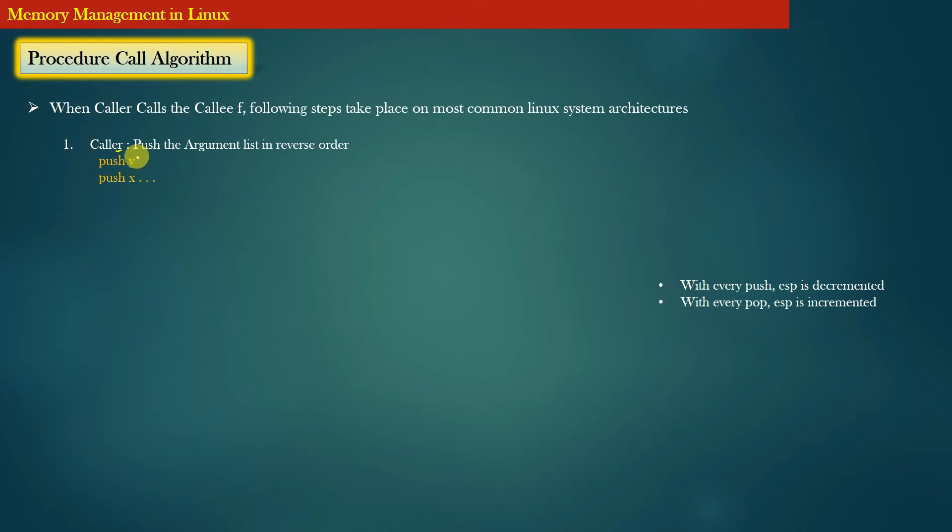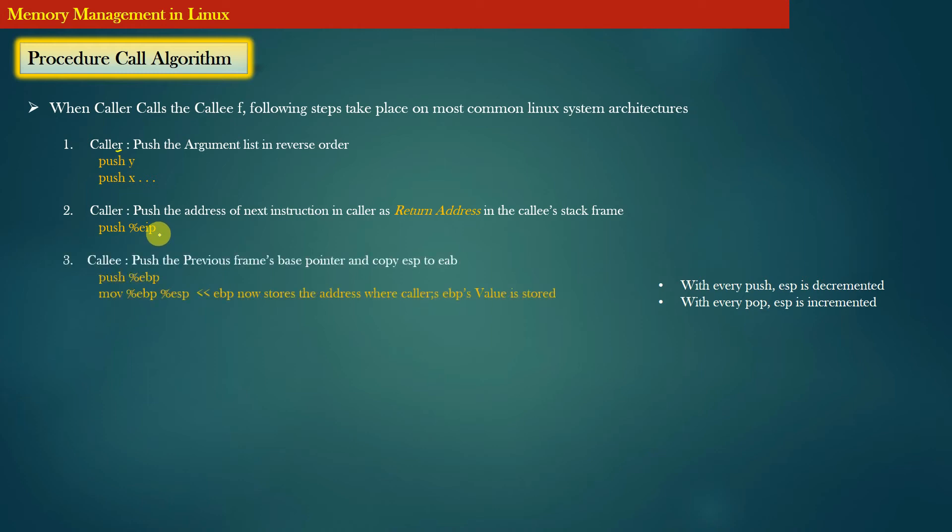Then in the second step, the caller needs to push the address of next instruction as the return address in the callee's stack frame. So the current value of EIP register is then pushed into the stack memory, and this action is also done by the caller function.